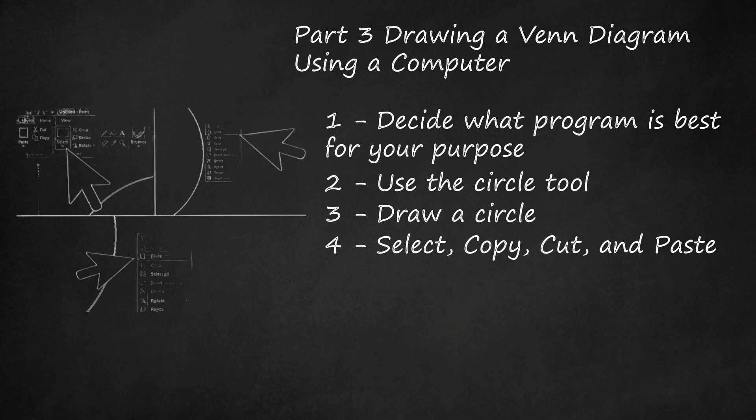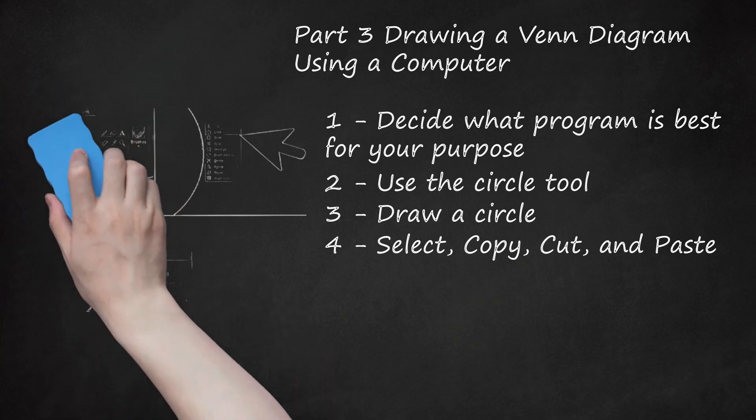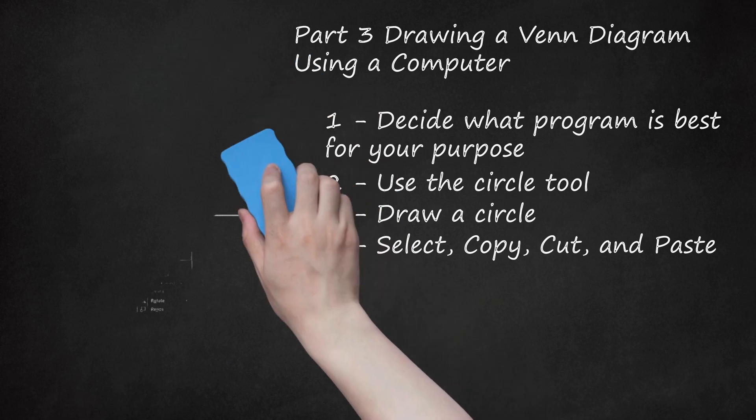Press Ctrl plus C while the circle is in the box to copy it. Next, press Ctrl plus V to paste a duplicate copy of your circle into the top left hand side of your canvas. Mouse over to the duplicate copy and, using the cursor, hold down the left mouse button and drag the duplicate over to the original. Adjust the overlap as needed.